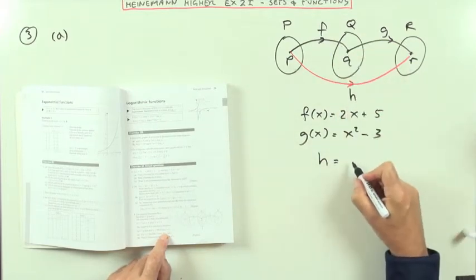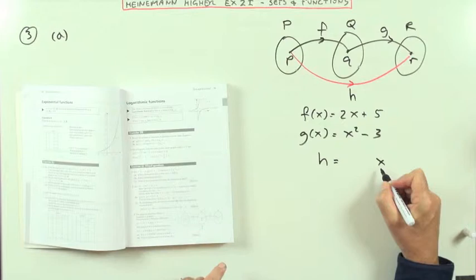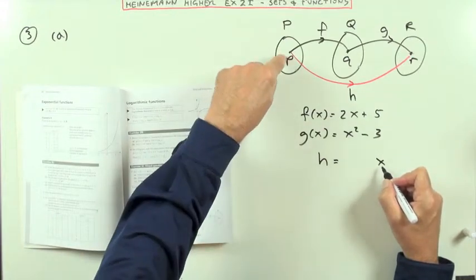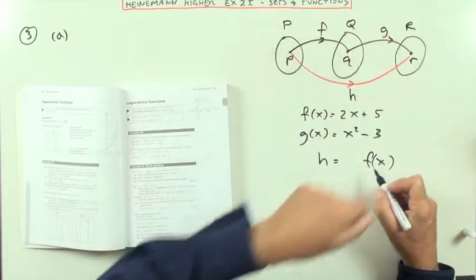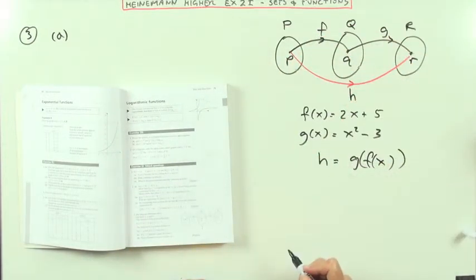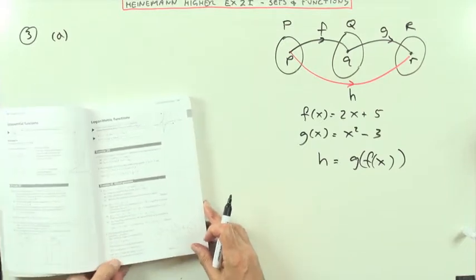h is going to be arrived at by starting with x, whatever number that is, then f acts on it, and then letting g act on that. So it's that composition there. Now what does it say for part a?